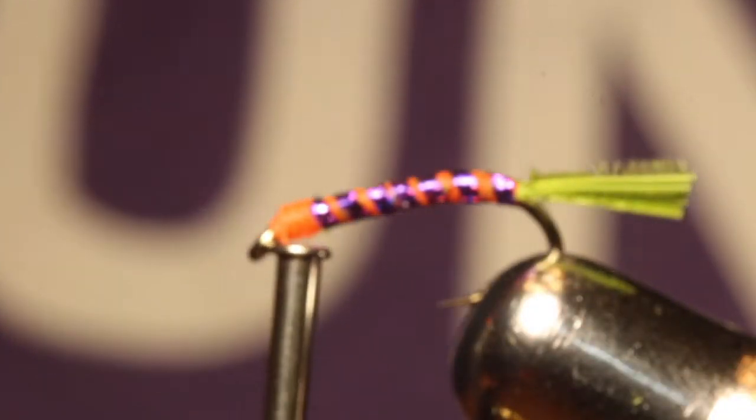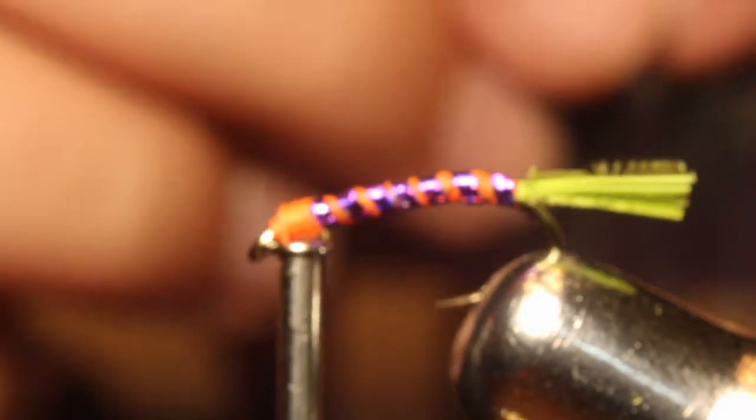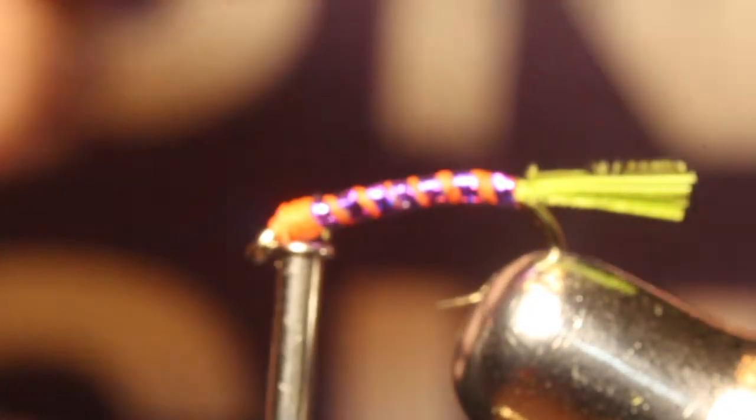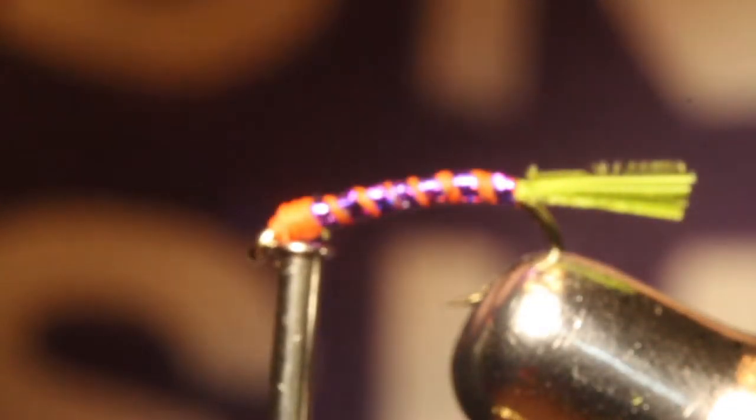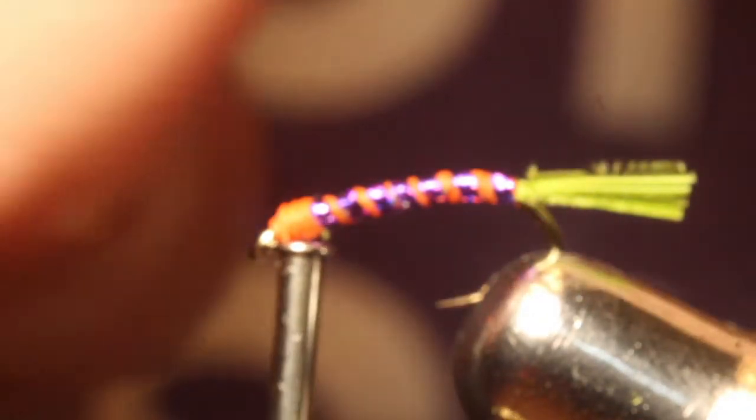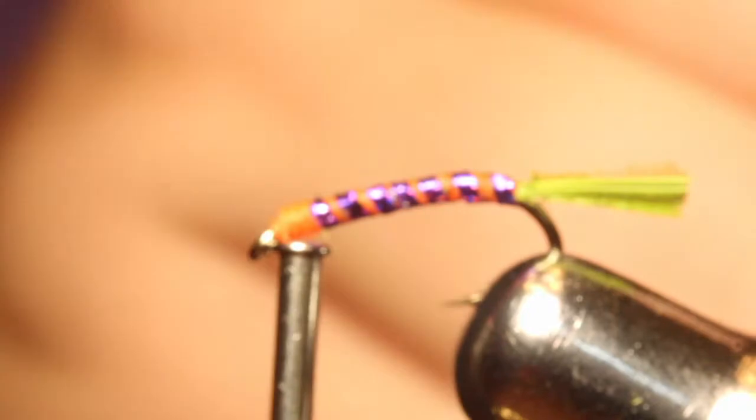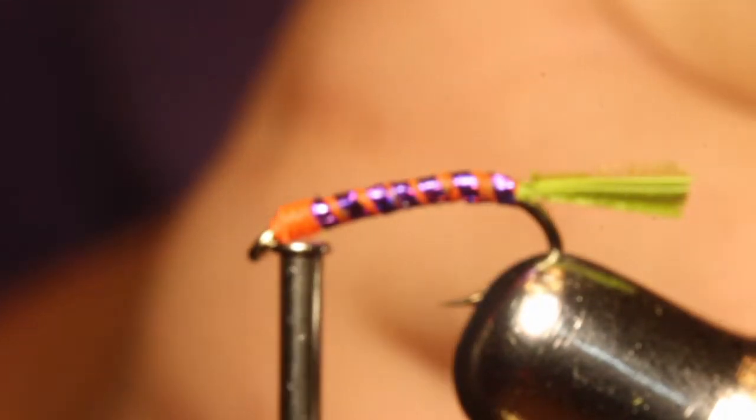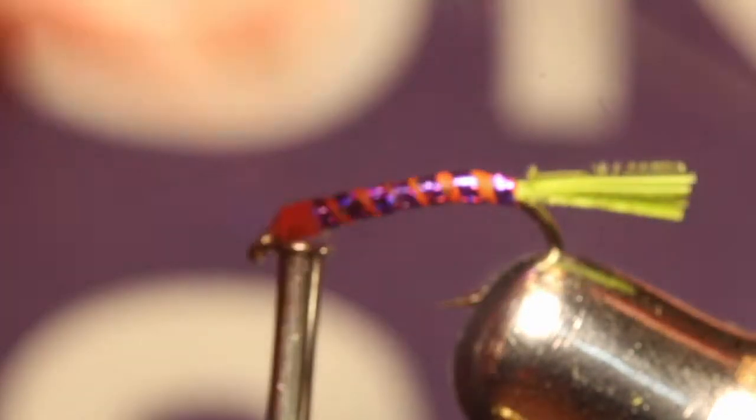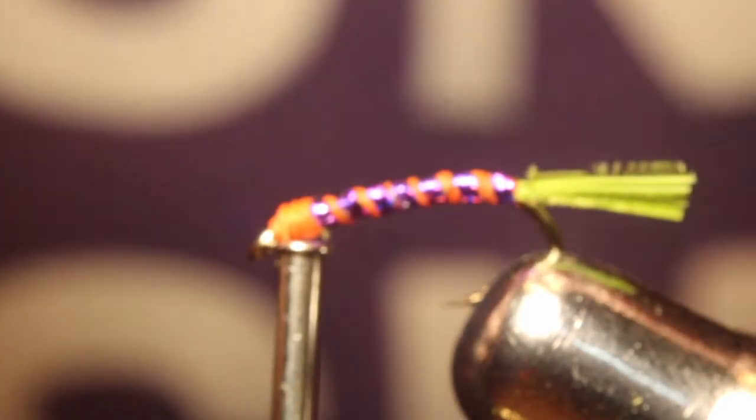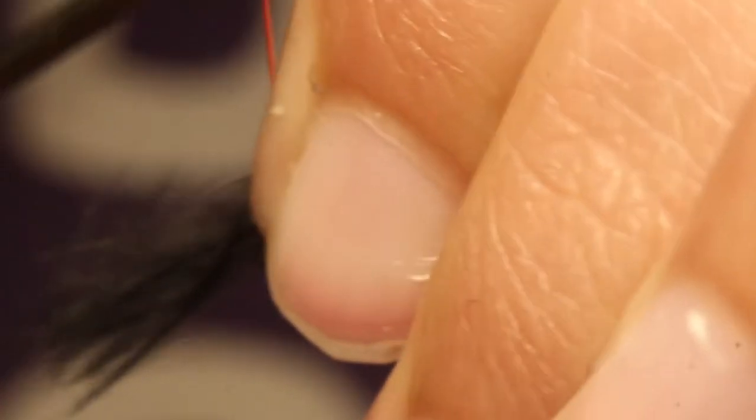Now you're going to take some black feathers that look like this and you're going to take a little bit off of the end. So that looks like that. And if it's long, it's okay. We'll fix that later.